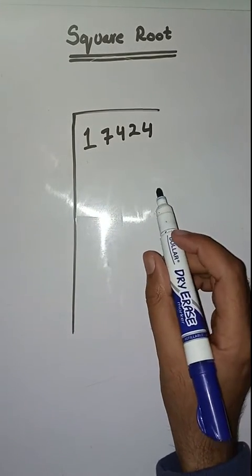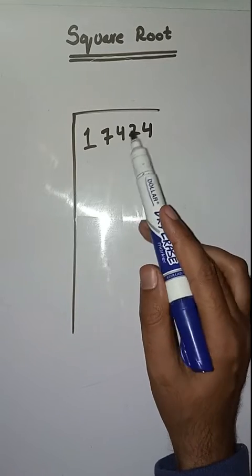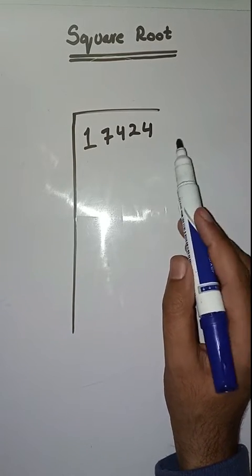Hello students, hope you all are fine. Welcome to my channel. Today we will learn how to find square root. We have to find square root of 17424. So first step is we have to make pairs from right to left.